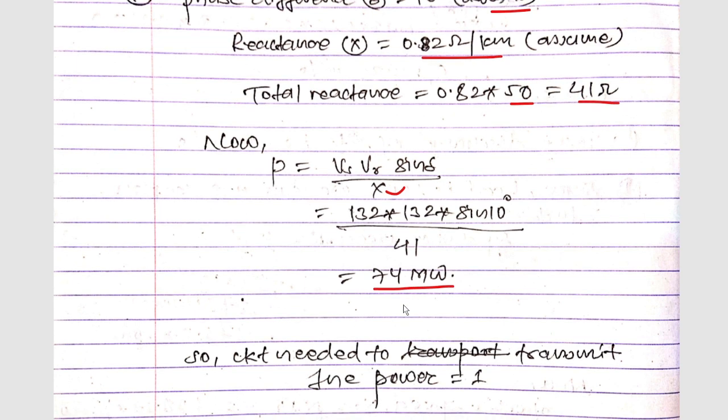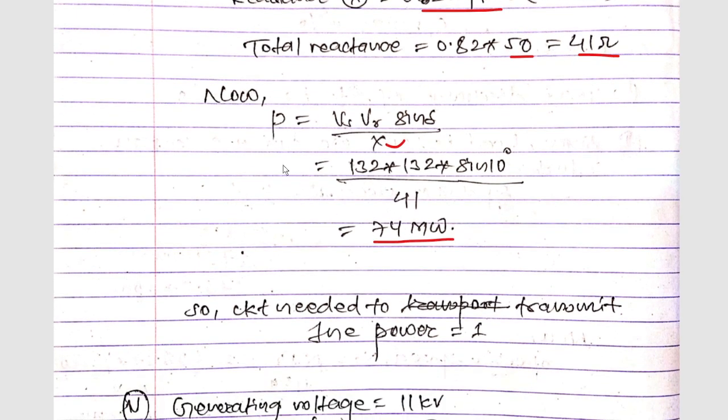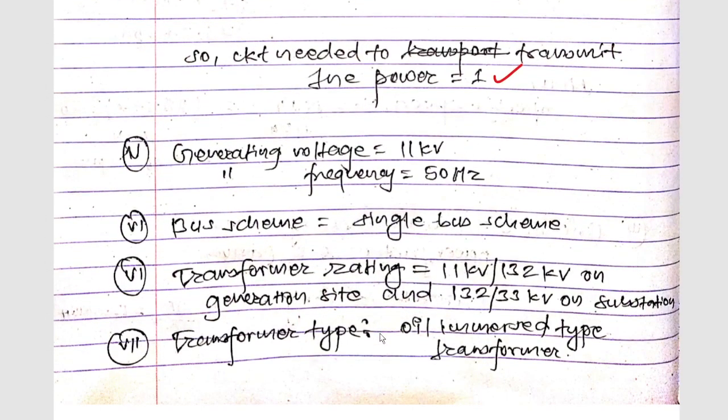The power is 74 megawatts, and the circuit needed to transmit this power will be one circuit. The generation voltage will be 11 kV in rating.